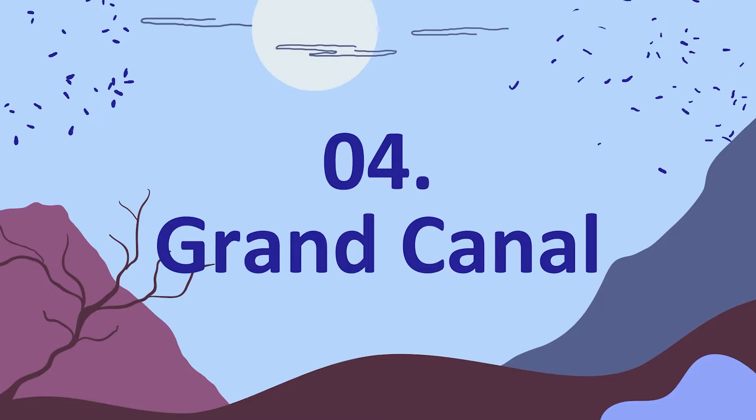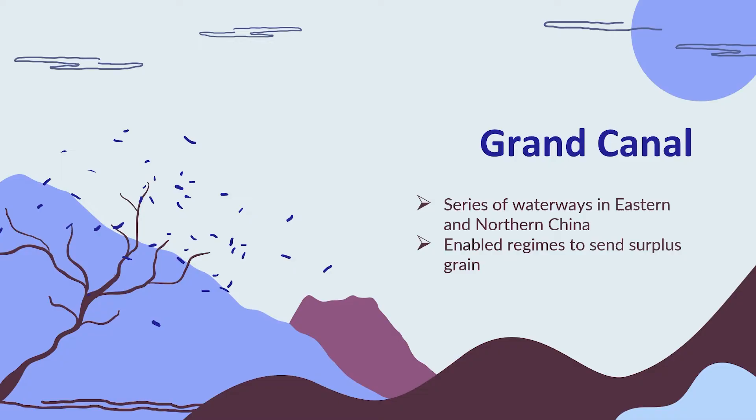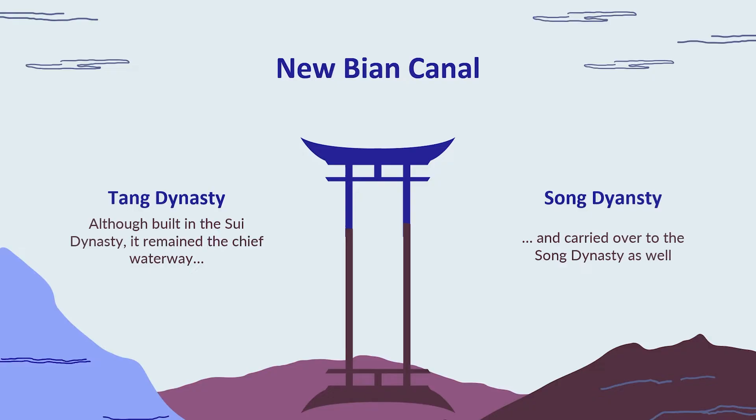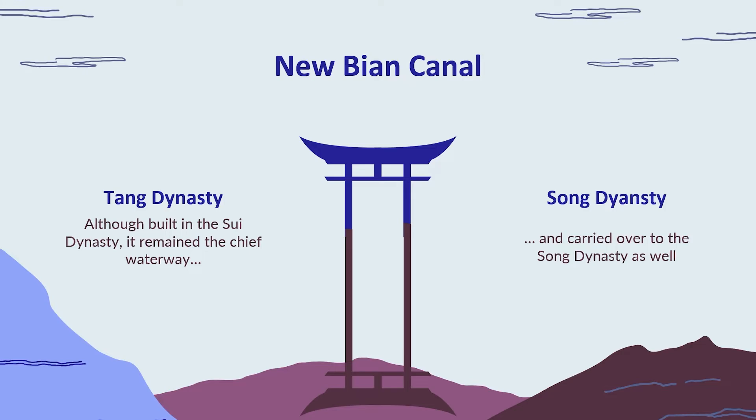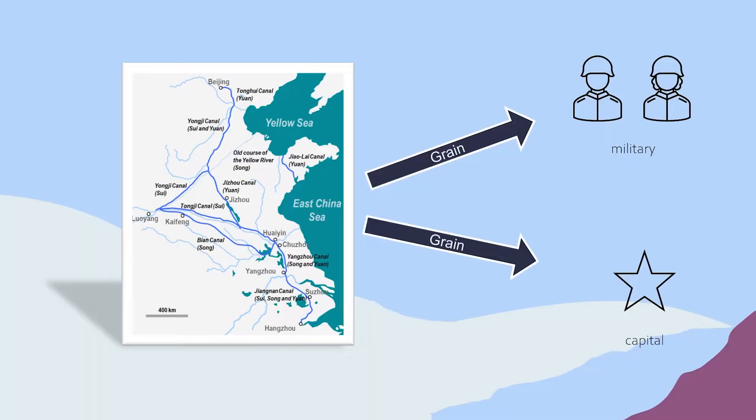One very specific technology is the Grand Canal — a series of waterways in eastern and northern China that enabled regimes to send surplus grain to different areas. The Grand Canal was built in the Sui dynasty but remained the chief waterway throughout both the Tang and the Song dynasty. These canals operated as a way to get surplus grain into the capital or even to the military who were defending China, meaning their economy was much stronger and people had more food.